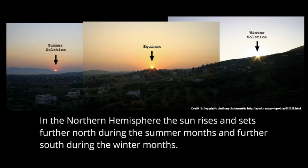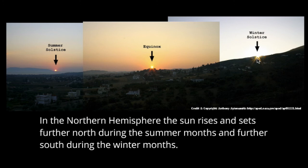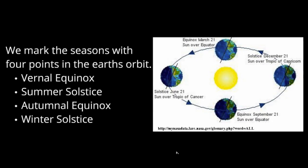In the northern hemisphere, the sun rises and sets further to the north during summer months and further to the south during winter months. We can mark the points of the seasons with the earth's orbit using four key points: the vernal equinox, which is the first day of spring when the sun crosses the ecliptic; the summer solstice, when the sun is furthest from the earth; the autumnal equinox, when the sun crosses the ecliptic again; and the winter solstice, when the sun is actually closest to the earth.